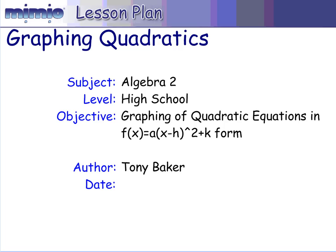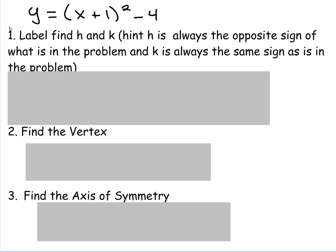This is a review of how to graph quadratic equations in the vertex form, which is A, parentheses X minus H, squared, plus K. Example today is Y equals parentheses X plus 1, close parentheses, squared, minus 4.